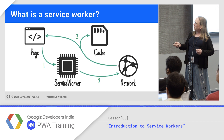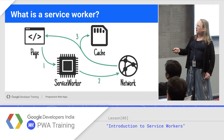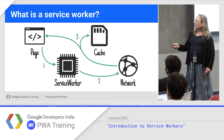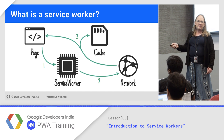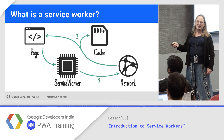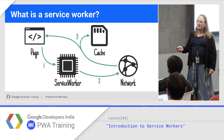A service worker intercepts your page's requests. It can look at the network first, pick up the response, put a copy in cache, and return it to your page. The next time through, the service worker can get the request and go right to the cache, cutting out the network entirely.